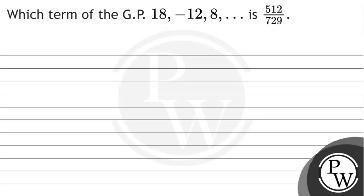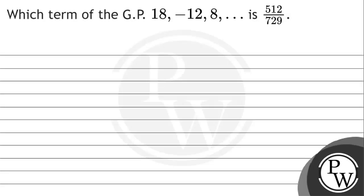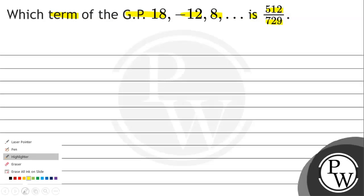Hello. Let's read this question. The question says: which term of a GP -18, -12, 8... is 512 by 729?